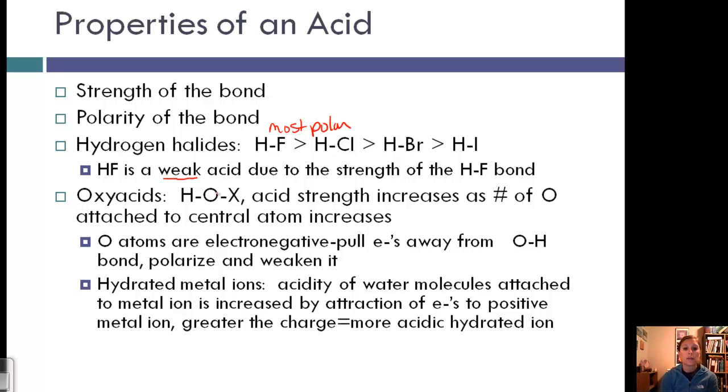Another example along the same lines is oxyacids with hydrated metal ions. We talked about this in the previous section with aluminum 3+. The acidity of water molecules attached to the metal ion increases due to the attraction of electrons to the positive metal ion. The greater the charge, the more acidic the hydrated ion is. So Al³⁺ has a very high charge and produces an acidic solution.